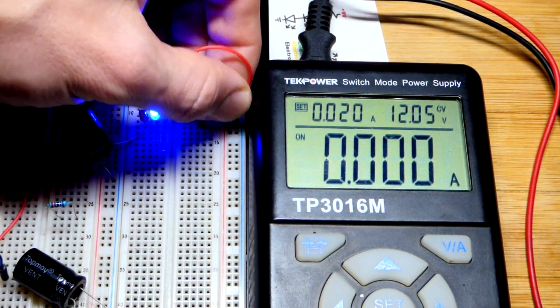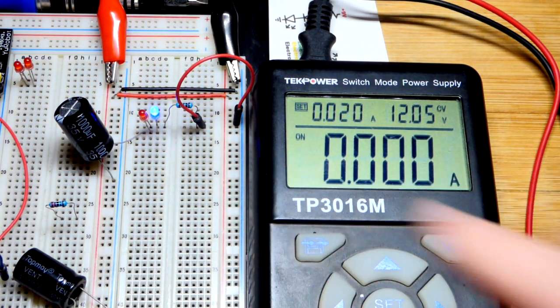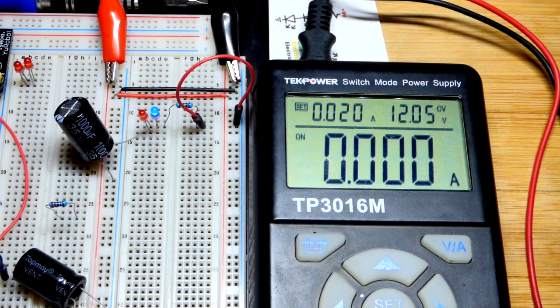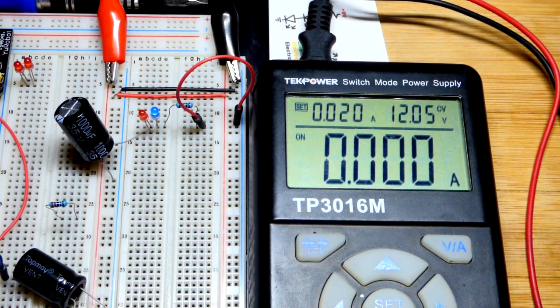Now you're not going to see current on the meter when the blue LED lights up. Blue LED is just naturally brighter. It doesn't really have any different amount of current for the most part going through it.